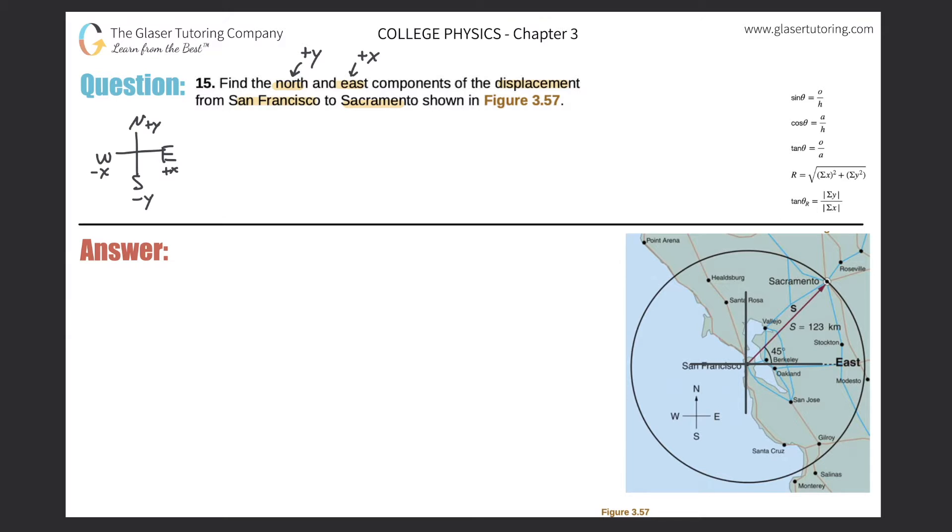My x component, or my east component, make sure I don't mess that up again, would be this vector right here, okay, in red. This would be my east component, and that's also equal to the x component.